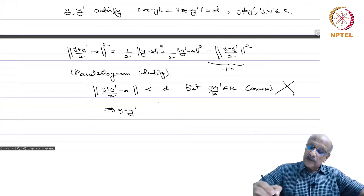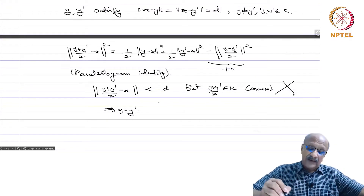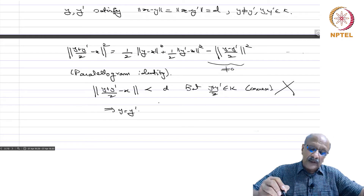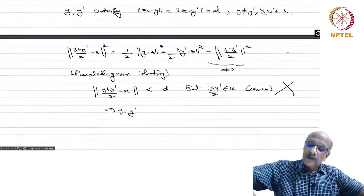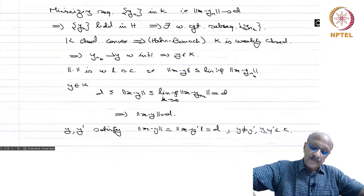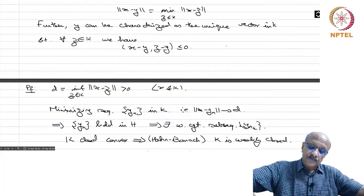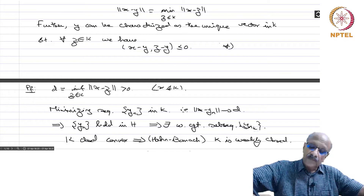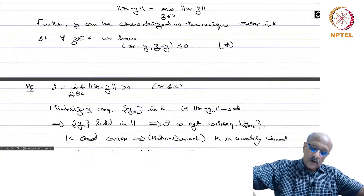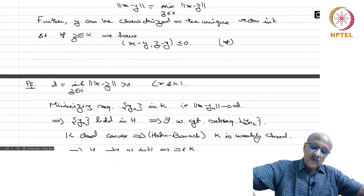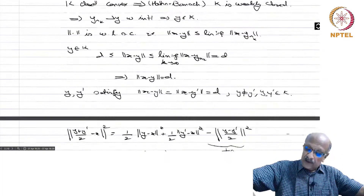Now we show the characterization: a minimum point — the point which is closest — will satisfy the inequality (call it star). We have to show that star is an equivalent way of saying norm of x minus y is the minimum of norm of x minus z over z in K.